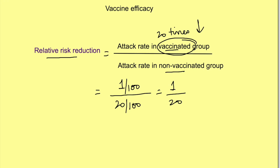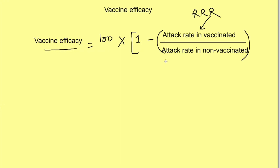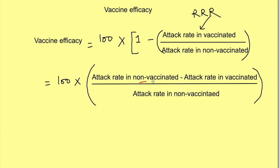From this relative risk reduction, we calculate vaccine efficacy by this formula: 100 into 1 minus attack rate in vaccinated divided by attack rate in non-vaccinated group, which can also be written as 100 into attack rate in unvaccinated minus attack rate in vaccinated divided by attack rate in unvaccinated.